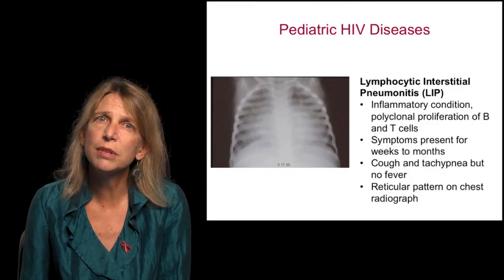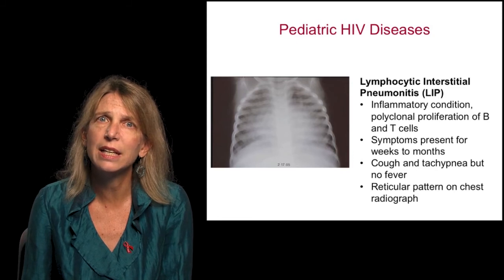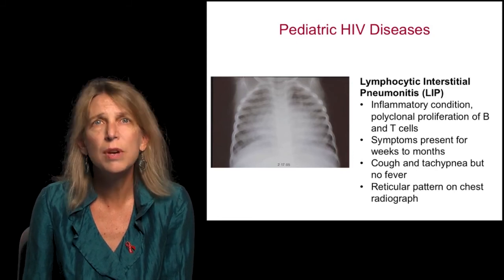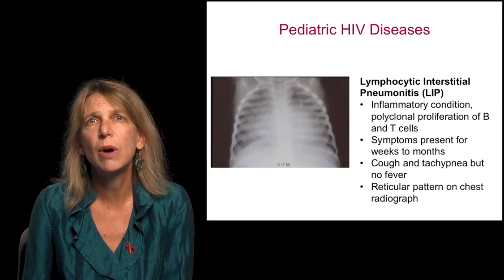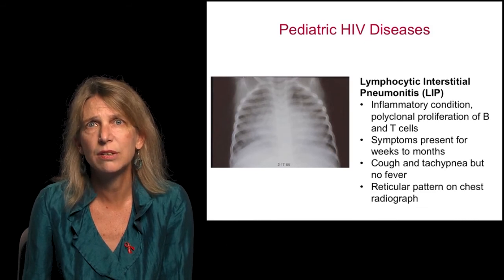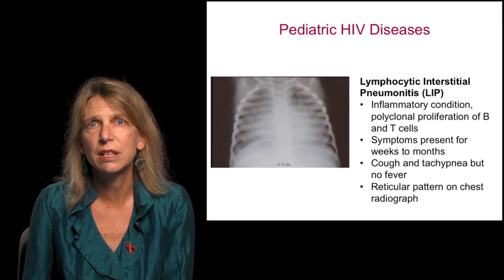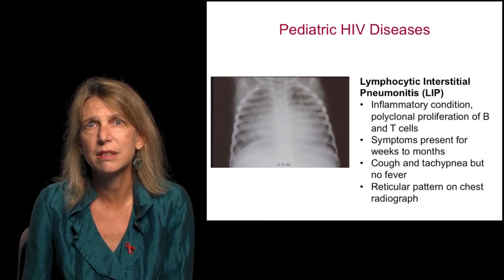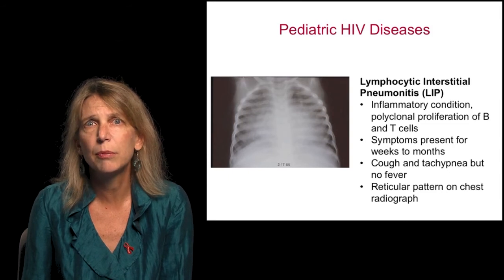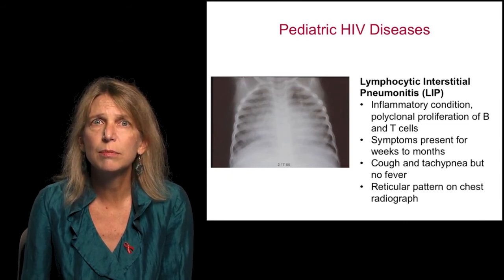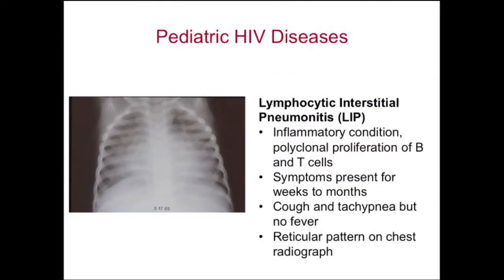In general, children present with similar AIDS-defining conditions as adults, with a few exceptions. One of these is lymphocytic interstitial pneumonia, an inflammatory condition with polyclonal proliferation of B and T cells. Symptoms are present for weeks to months. Children may present with cough and tachypnea, but no fever. There is a classic reticular pattern on chest radiograph.